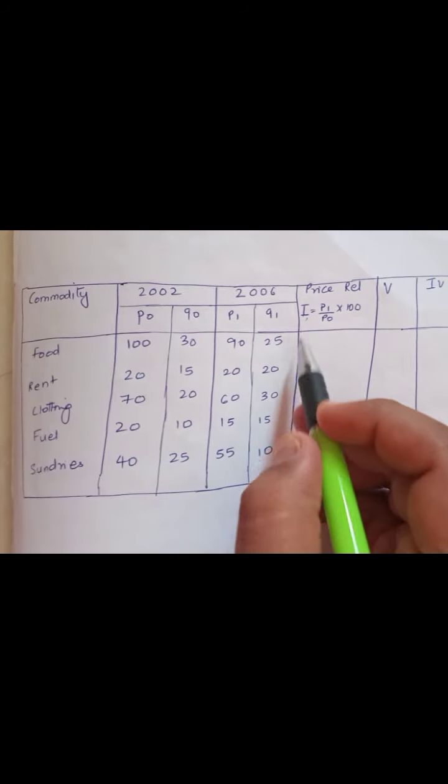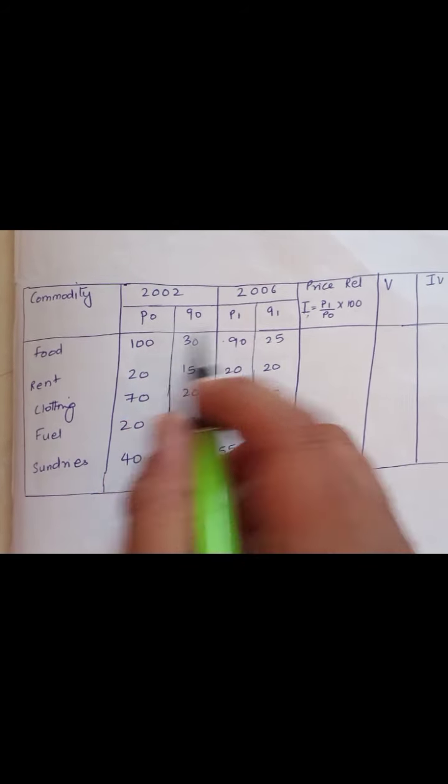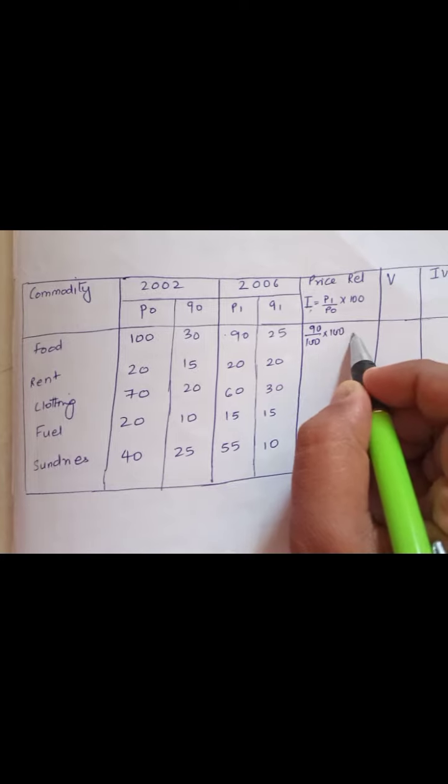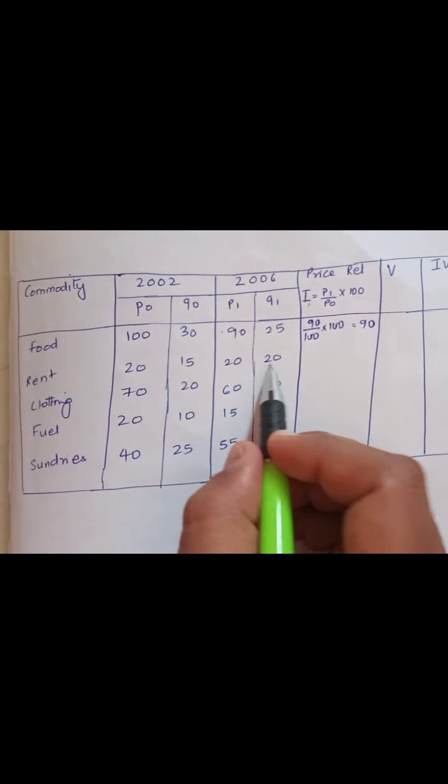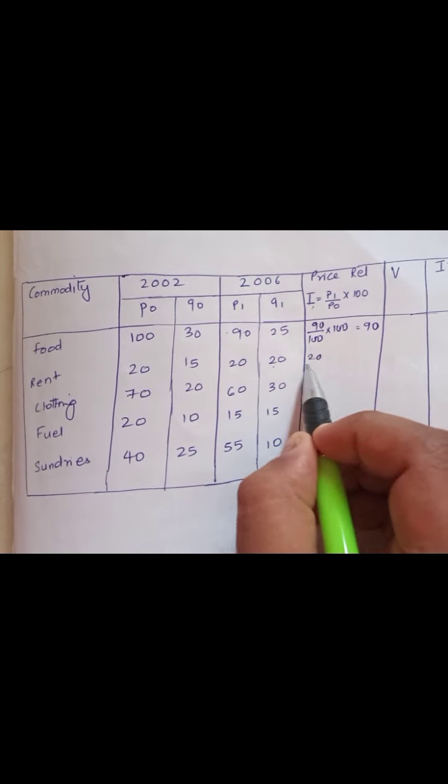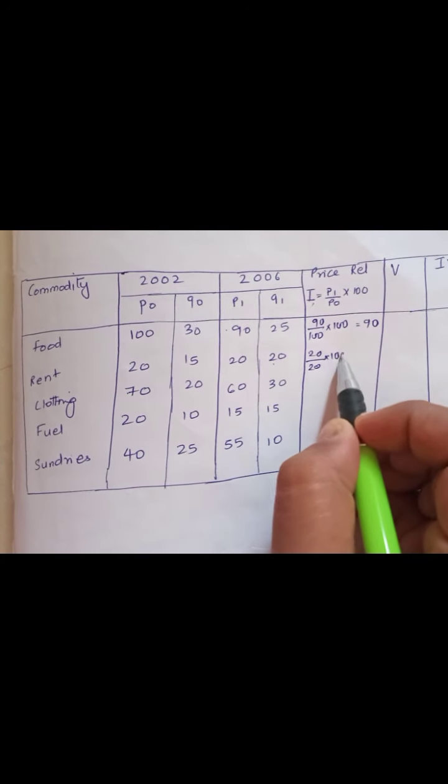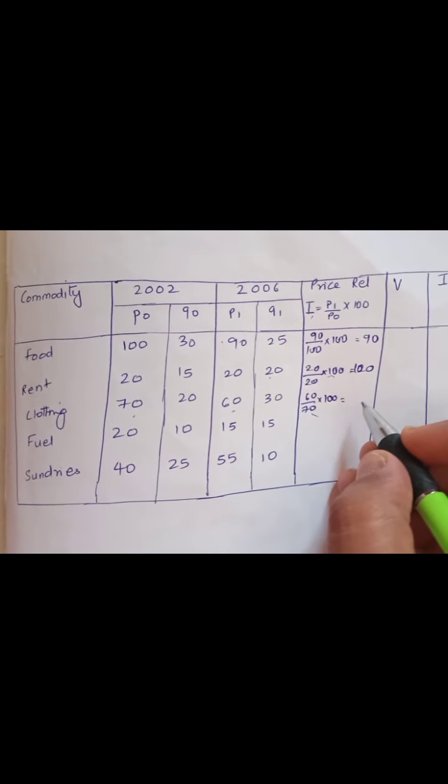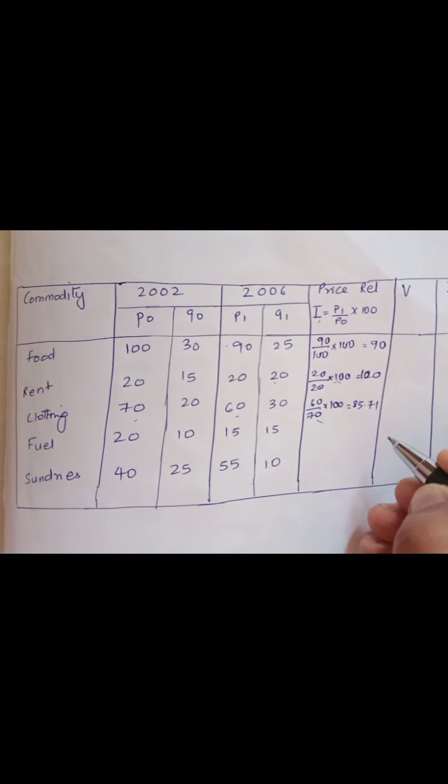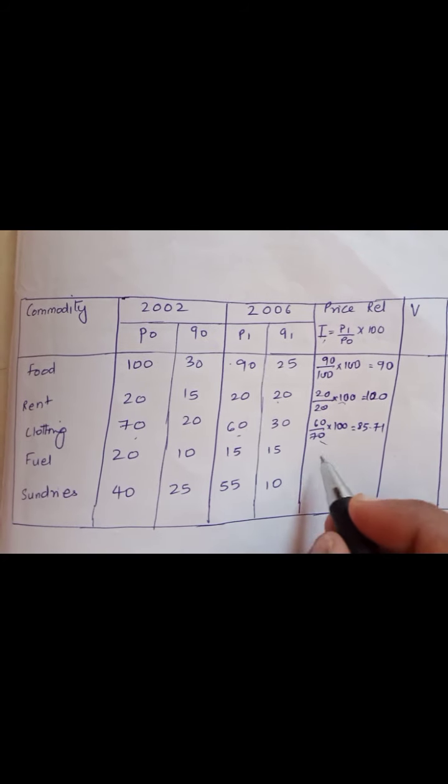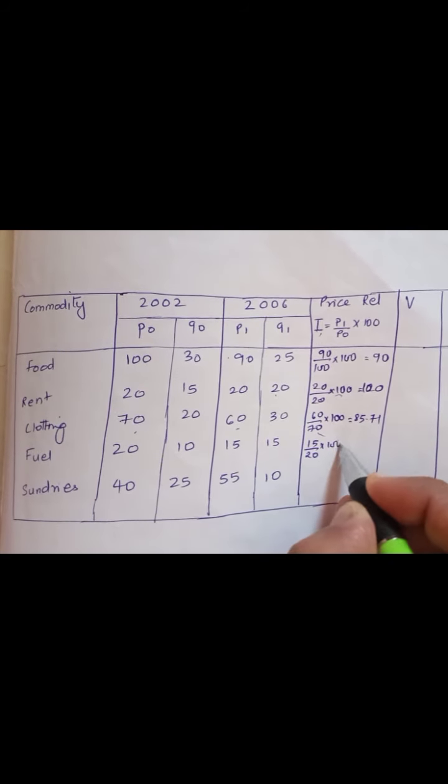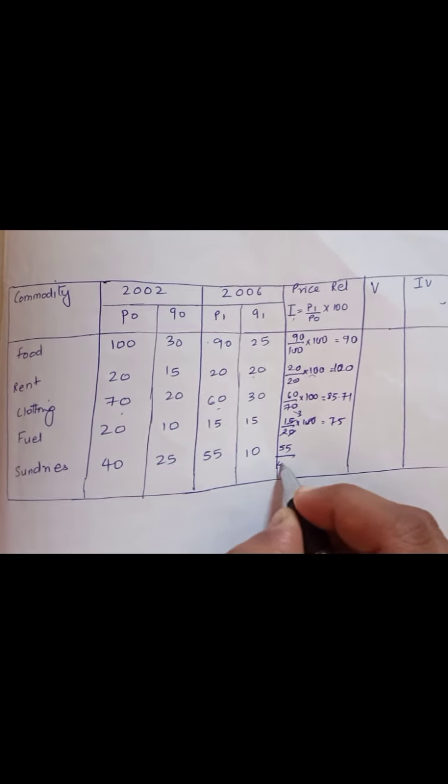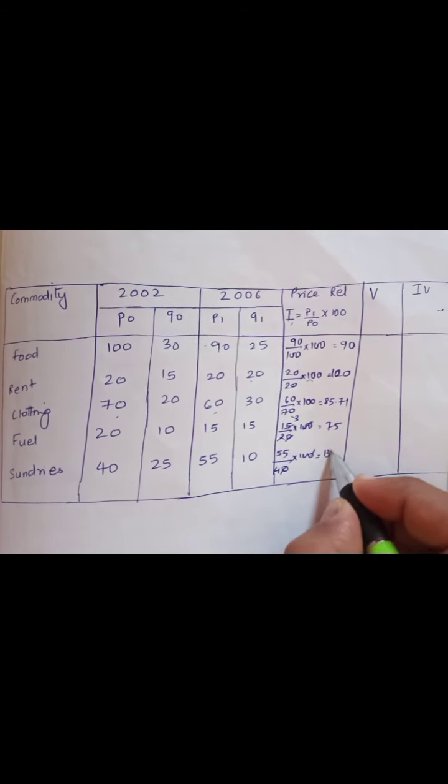For finding i, we need to understand P1 divided by P0. So P1 is 90 divided by P0 is 100 into 100, that gives you 90. The second row: 20 divided by 20 into 100. Similarly, 60 divided by 70 into 100, that will give you 85.71. 15 divided by 20 into 100 gives 75, and for the last column, that is 55 divided by 40 into 100 gives 137.50.